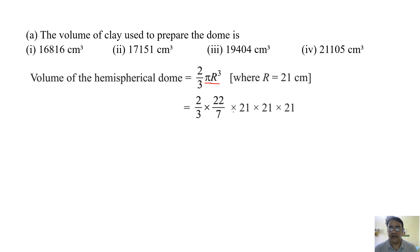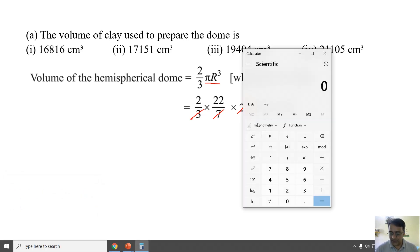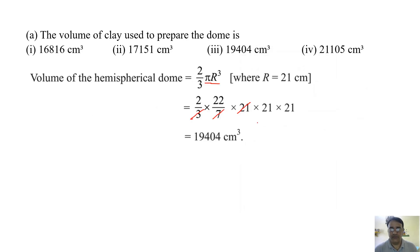Simplifying: 3 × 7 = 21, so 21 cancels, giving 22 × 4 × 21 × 21. This gives us 19,404 centimeter cube. So this is the correct answer — the correct option is the third one.